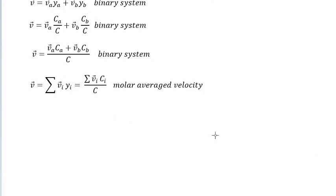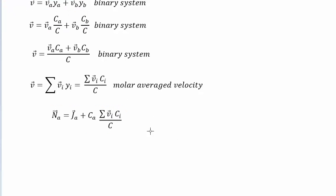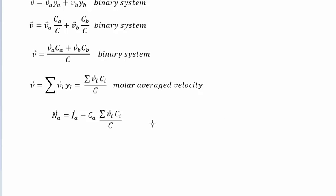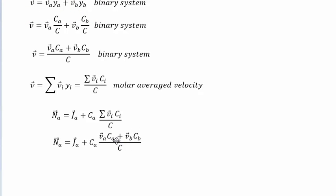Doing that, what we get is this. We keep C_A just the same, but over here with that molar average velocity, we're substituting this new expression in. Again, let's assume it's a binary system just to make it simpler to look at. And we have this now.